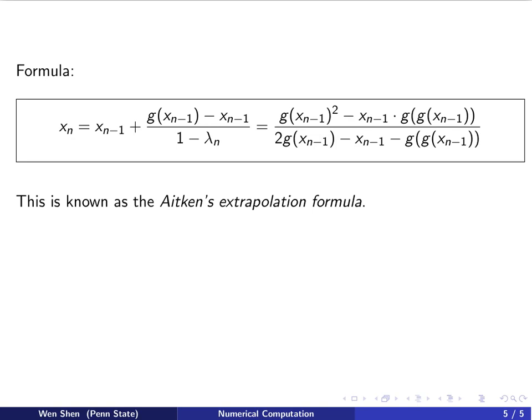So this expression can be viewed as given the value xn minus 1, one has this expression to compute the value xn as the next iteration value. So this is known as the Aitken extrapolation formula.